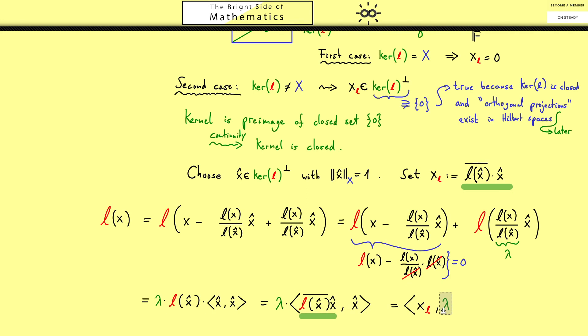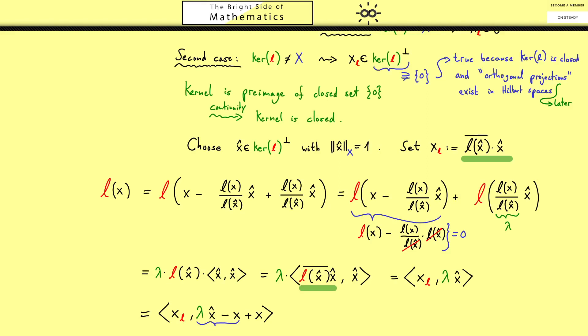Now in the next step we pull in the lambda factor into the second component. Here you see we are almost finished because this one is the same as this one with the inner product. However to get the result with L, we have to do the same trick as before. So subtracting and adding x again. Then we know by the same calculation as before that this one is in a kernel of L. And since xL is in the orthogonal complement the only thing that remains is the inner product with xL and x. This is now exactly what we wanted to show because the equality holds for all x.